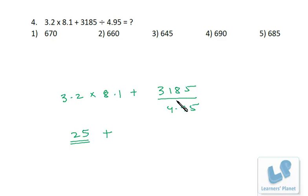Now this is really a tedious calculation that you can see: 3185 and 4.95. Now directly 4.95 cannot be written as 5 and 3185 cannot be written as 3200, because if there is anything wrong in the calculation, we will end up with the wrong answer, because it's 670 and 660, 645, 690, and 685.